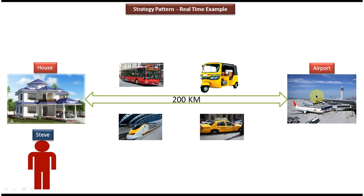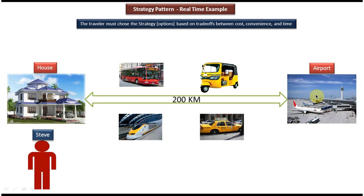So he has four options and he has to choose one option in order to go to the airport. As per the strategy design pattern, for a particular task there will be multiple solutions available, and from those solutions the client has to choose one solution at runtime. Here, Steve has to choose one option based on cost, convenience, and time in order to go to the airport. This is the best example of the strategy design pattern.